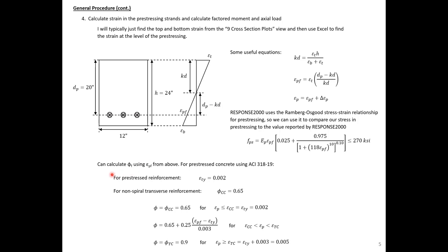This will help make sure our calculations are correct. We can then use epsilon_p, or epsilon sub pf, to find the phi factor at different values. For ACI 318-19, for pre-stress reinforcement, the yield strain is assumed to be 0.002. For non-spiral transverse reinforcement, the compression-controlled phi is 0.65. We can then use the ACI 318-19 equations to find our phi based on epsilon_p sub f, and we'll do that in a spreadsheet for our different points.